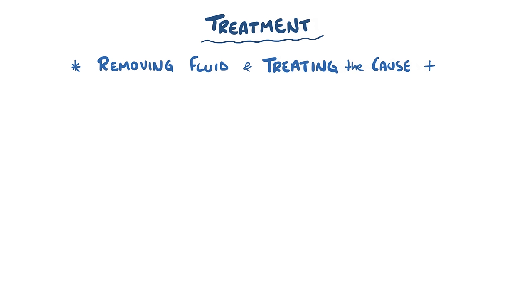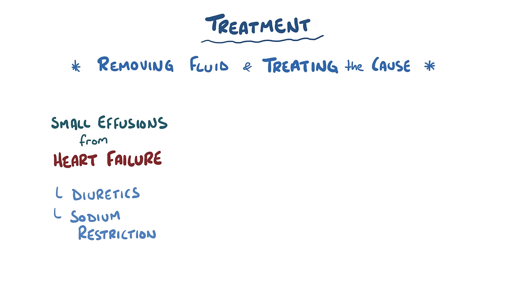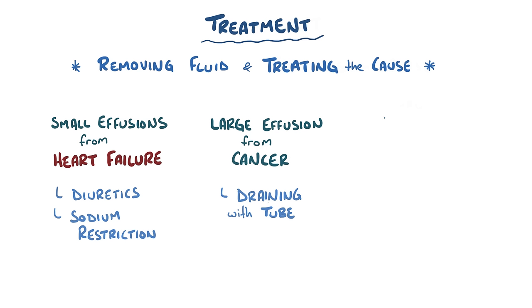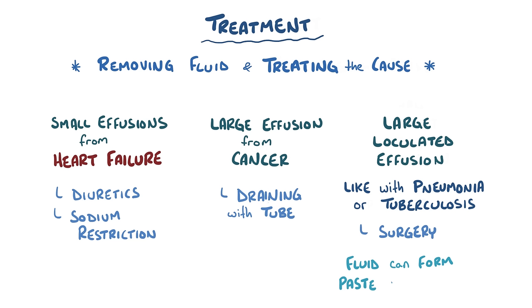Treating a pleural effusion typically means removing the fluid as well as treating the underlying cause, and the approaches can vary quite a bit. Small transudative pleural effusions resulting from heart failure might be treated with diuretics and sodium restriction, whereas larger pleural effusions due to an oncologic process might require draining with a tube. Finally, there might be a large, loculated pleural effusion caused by bacterial pneumonia or tuberculosis, which might need surgery because it can thicken into a paste-like substance called an empyema, which wouldn't drain easily through a tube.